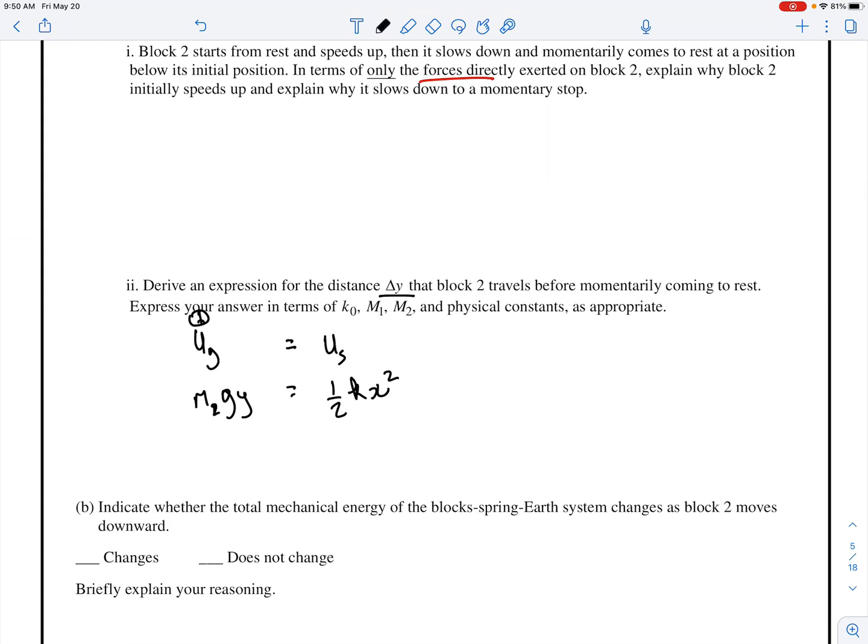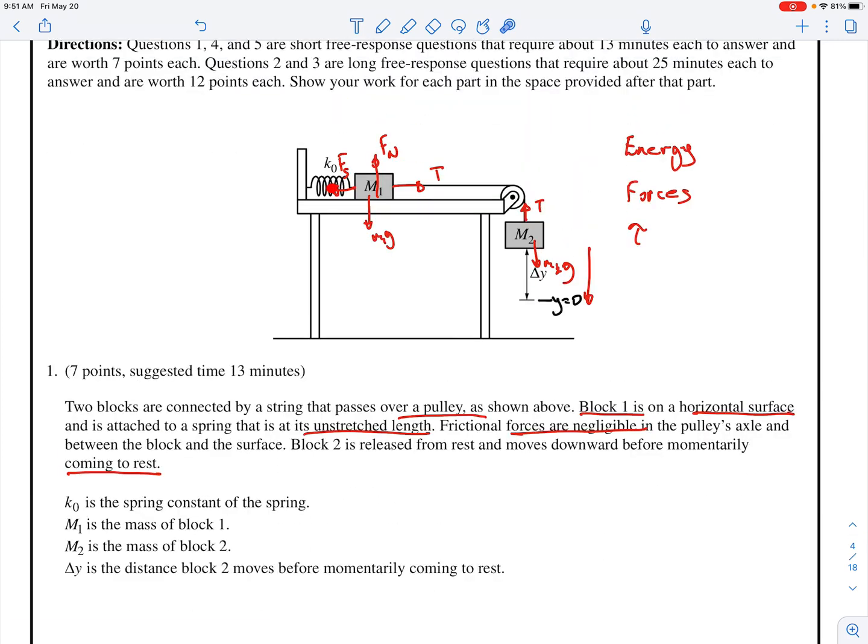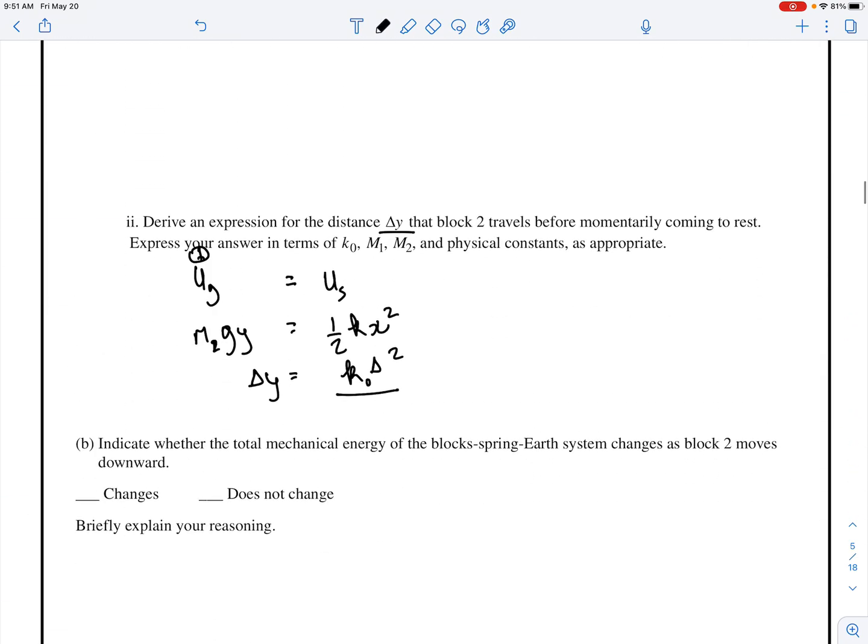And then you'll just set it up as M2gy equals half Kx squared, where your x would also be equal to delta y. Why would it be equal to delta y? Due to the fact that if this thing moved this distance, then the spring has to stretch that distance. So that is also equals to delta y. Sneaky! So your delta y equals 2M2g over K. I skipped a step. That's why you shouldn't skip steps. You should make sure you talk out the thing first before you do anything crazy. And that should be your answer.